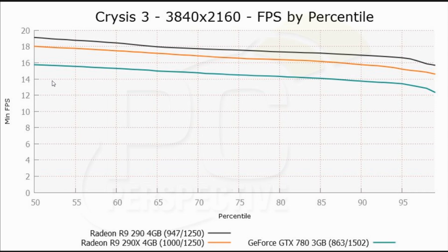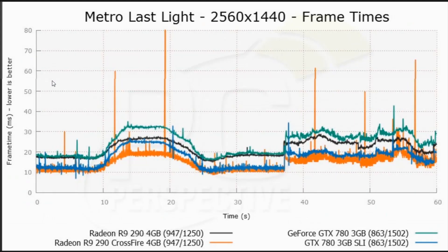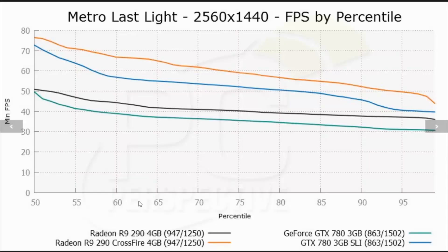The R9 290 is definitely proving to be an impressive part. Here's a set of graphs showing 290 Crossfire versus 780 SLI. In Metro Last Light at 2560 by 1440, the results are pretty good for AMD. We still have a little bit higher frame time variance with the 290s than with the 780s, but much improved over where it was six months ago and what I would consider a pretty good experience. The R9 290 Crossfire is definitely faster than the 780s in SLI when looking at average frame rates.